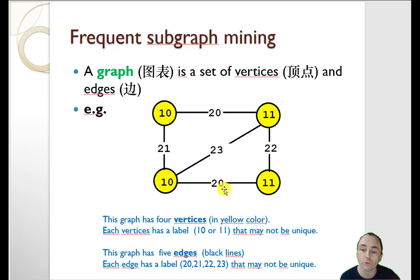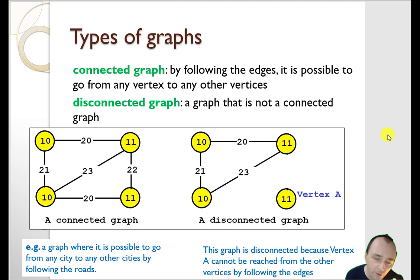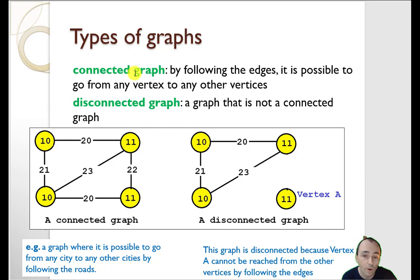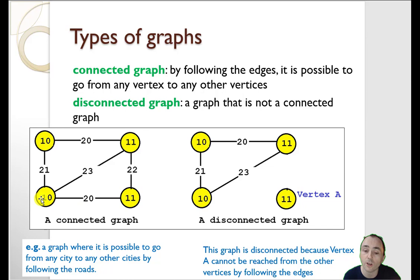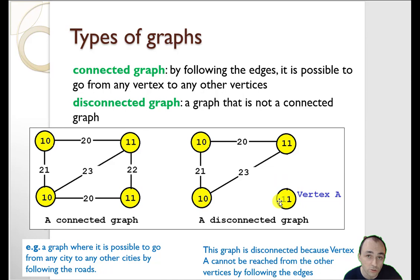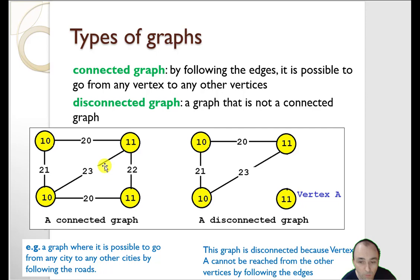We say this graph has four vertices and five edges. When we talk about graphs, we can talk about connected graphs or disconnected graphs. A connected graph is one where, by following the edges, you can go from any vertex to any other vertex. On the right I have an example of a disconnected graph, because from this node I cannot go to the other node — there are no edges. In subgraph mining, we are usually interested in finding the connected subgraph.